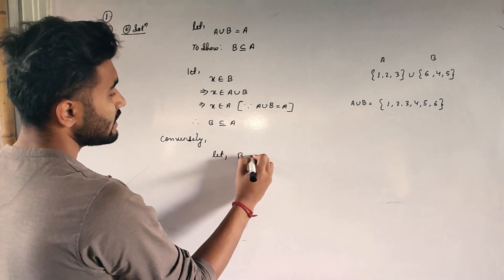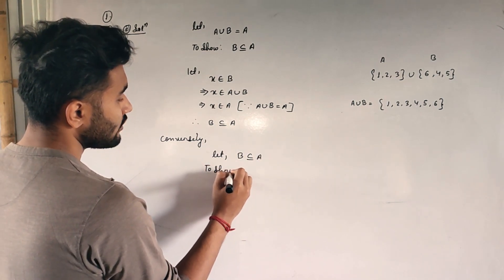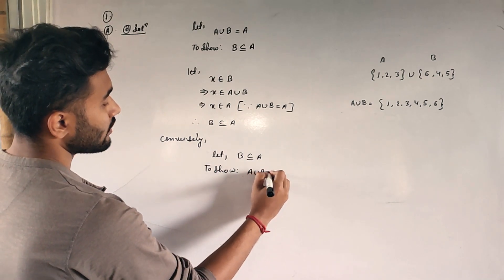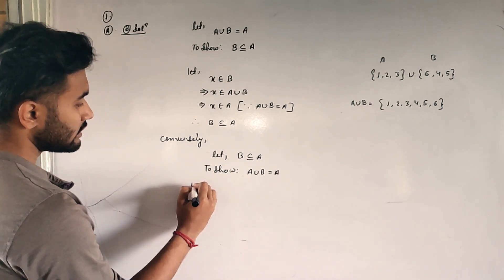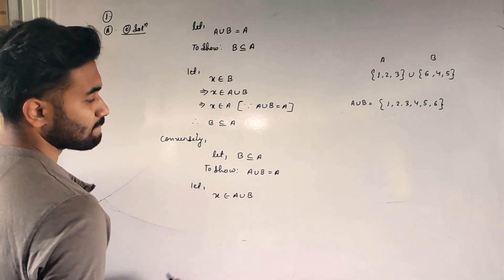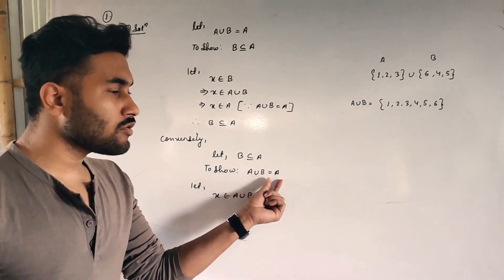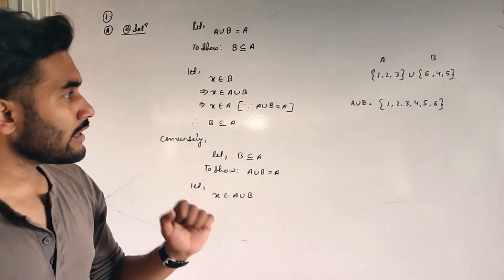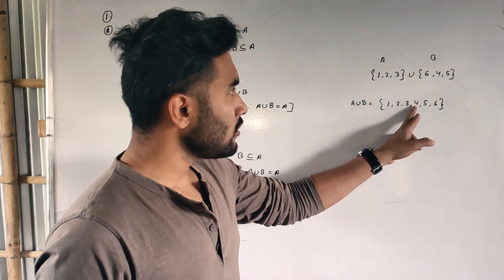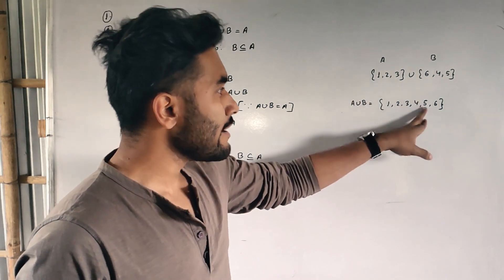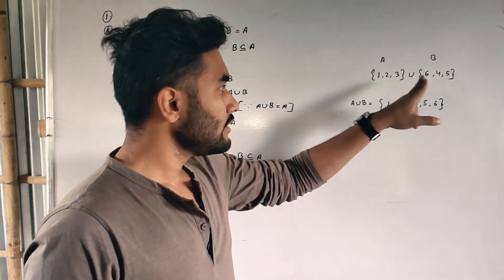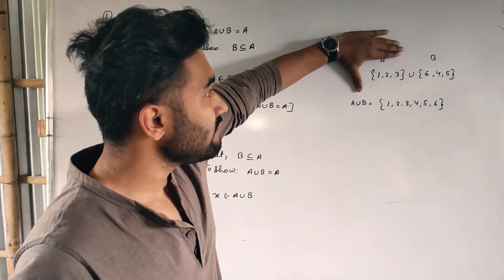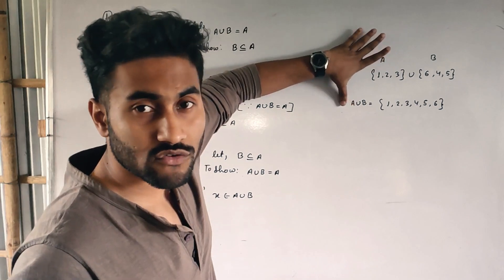Now the converse part. Conversely, let this time I take as given that B is a subset of A, and I have to show that A union B is equal to A. So let x belongs to A union B. Now x belongs to A union B — you see 4 belongs to A union B but 4 does not belong to A. 5 belongs to A union B but 5 does not belong to A. 6 belongs to A union B, 6 does not belong to A. So I cannot write x belongs to A directly.